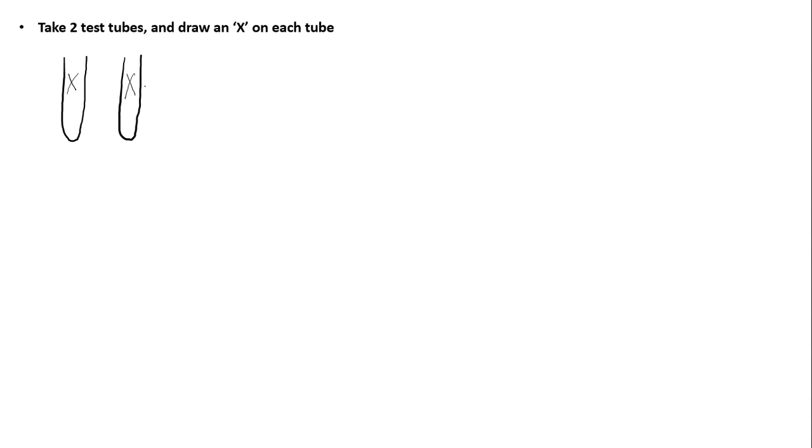You need to take two test tubes and draw an X on each tube. The reason why we have two tubes is because one will be your main experimental tube with your enzyme in it — label that T for trypsin. Your second tube will be a control. In your control you don't add the enzyme, so the purpose of the control is to see if it is trypsin that carries out the reaction. Label one T and one C.